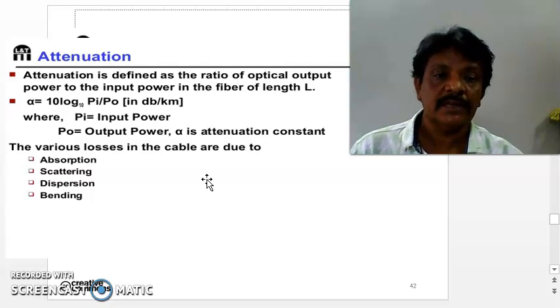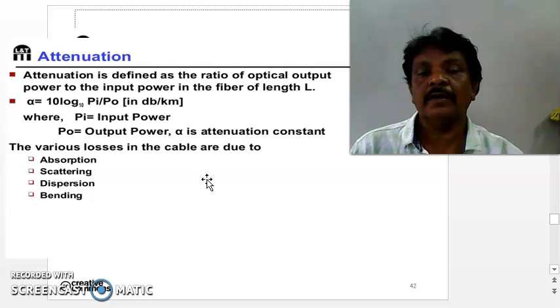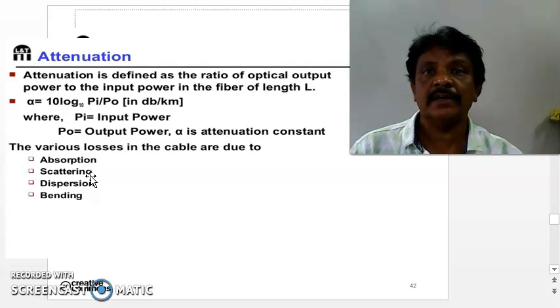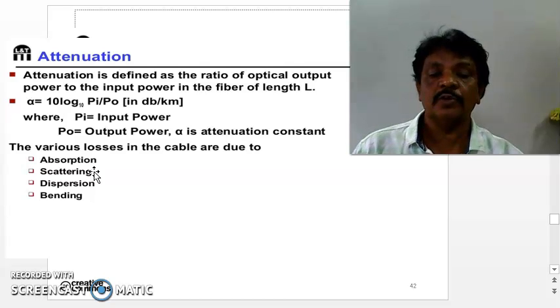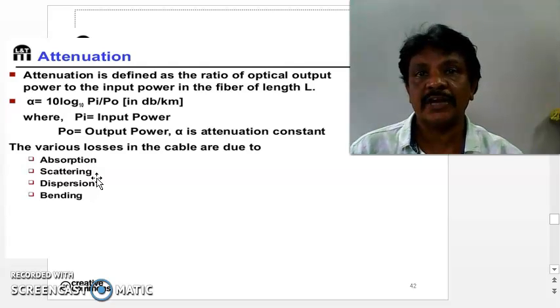Next one is scattering. Scattering of light is taking place when it is propagating through the core. The core is manufactured with a number of atoms. If there are impurities, those impurities can allow the scattering of signal. And as the signal gets scattered, the strength of the signal is reduced. So attenuation also happens by means of scattering.